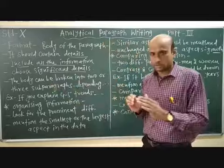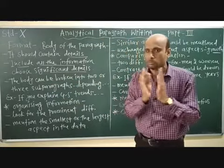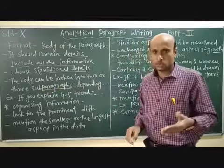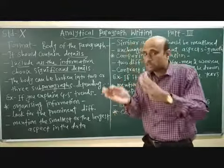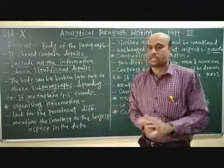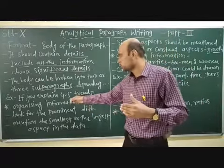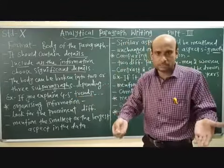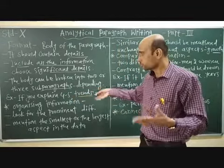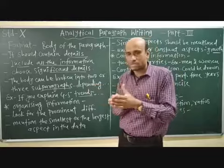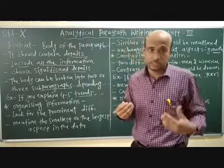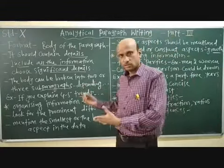The body of your paragraph writing can be broken into two or three sub-paragraphs, depending on the information provided to you in the table or chart. For example, if you are explaining 4 to 5 trends in the given data, you can use one sub-paragraph for each trend. This is best for the reader's understanding — one trend explained in one sub-paragraph.